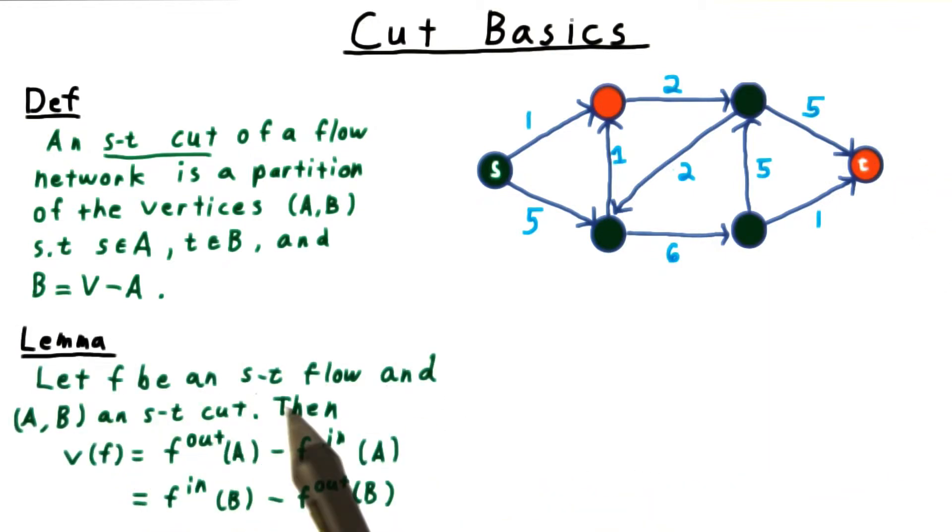Next, we observe that F is an ST flow and AB is an ST cut. Then the value of the flow is equal to the flow out of A minus the flow into A, which in turn is equal to the flow into B minus the flow out of B.